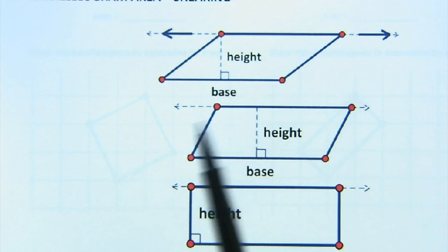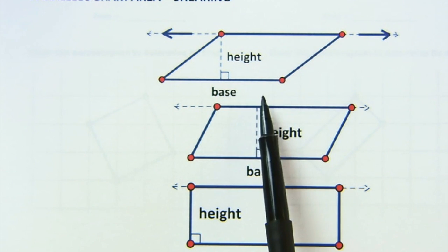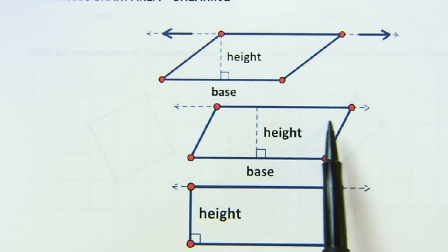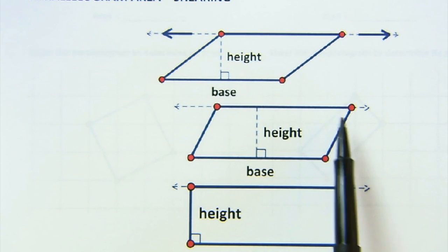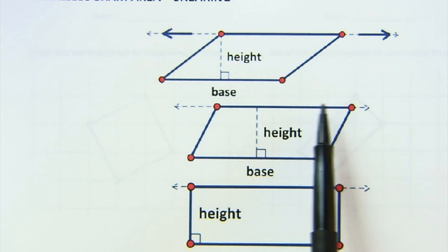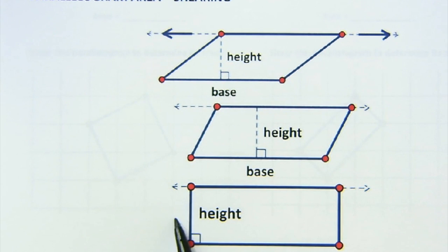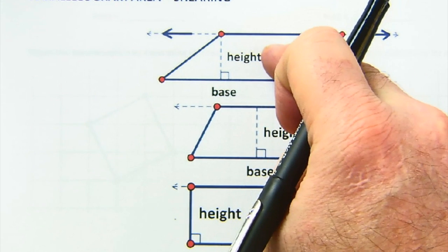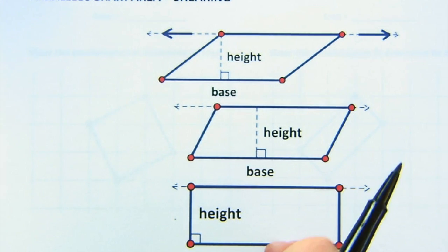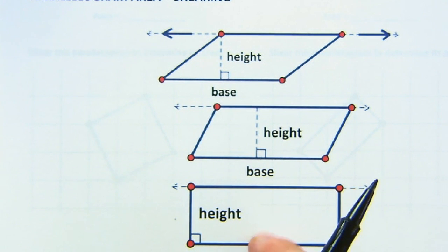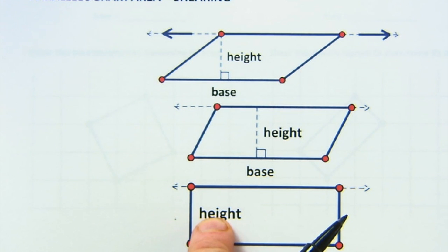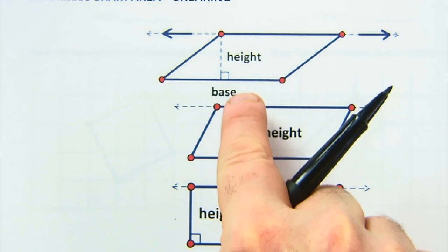And you can see it doesn't change our base. It doesn't change our height. It just changes the angles and the slopes and so on. So as we slide along, I could keep sliding that until I am exactly perpendicular. And there again, I made a parallelogram into the rectangle. And this rectangle has the same base and the same height as the original parallelogram that has the same base and the same height.